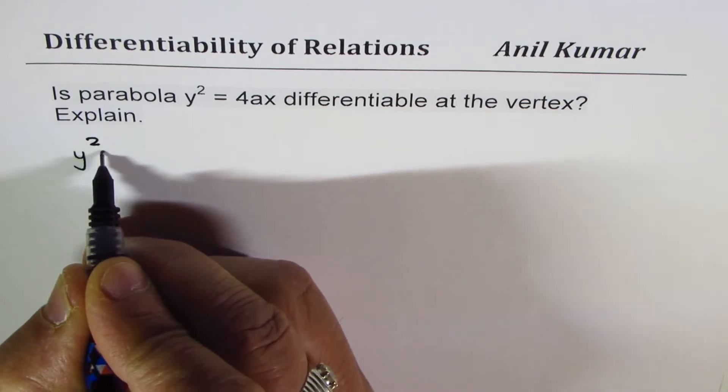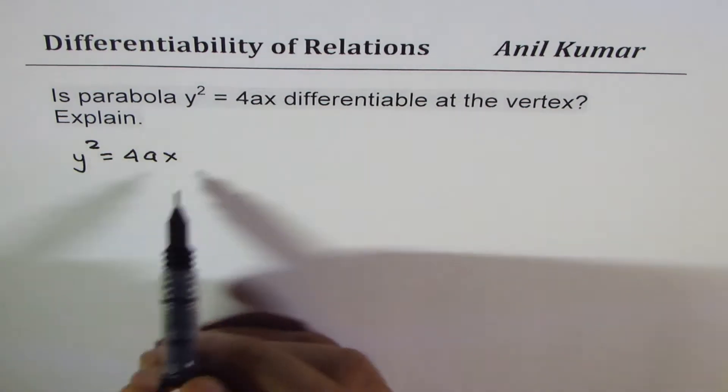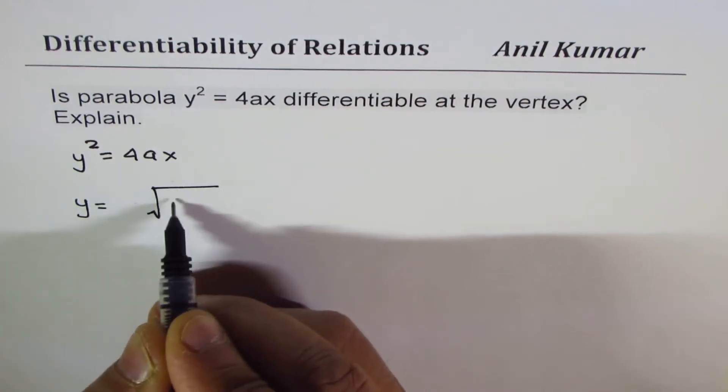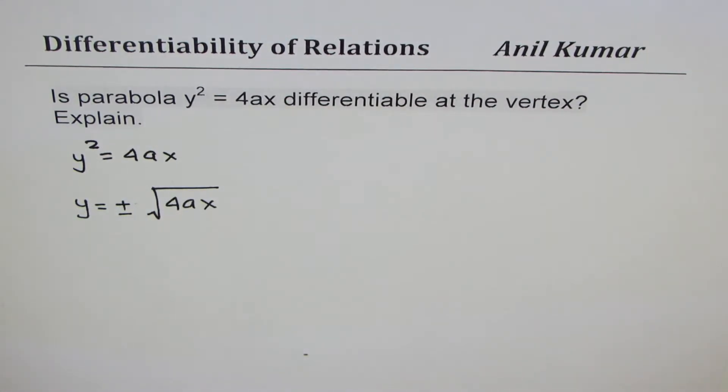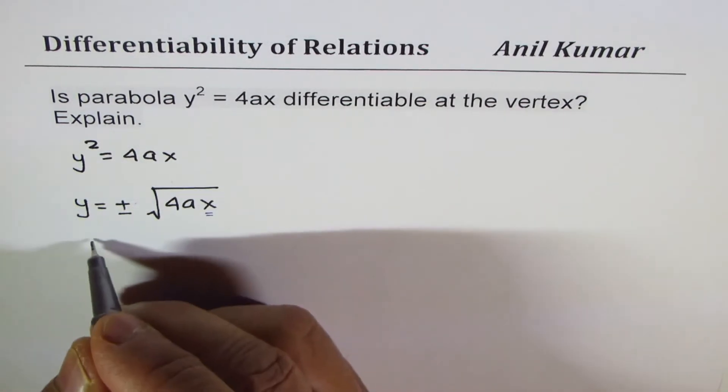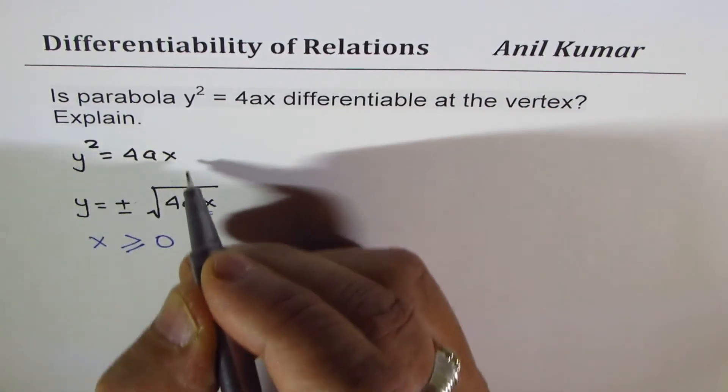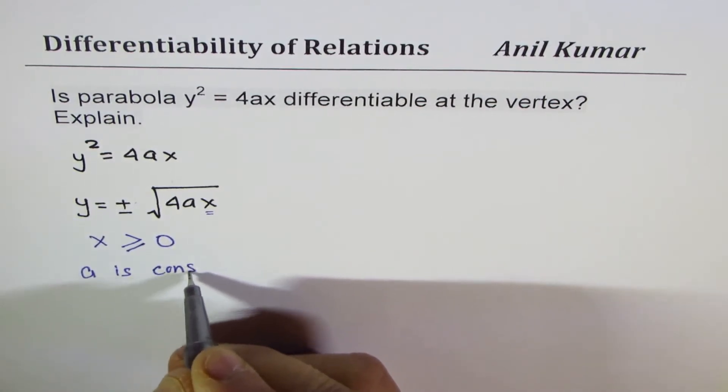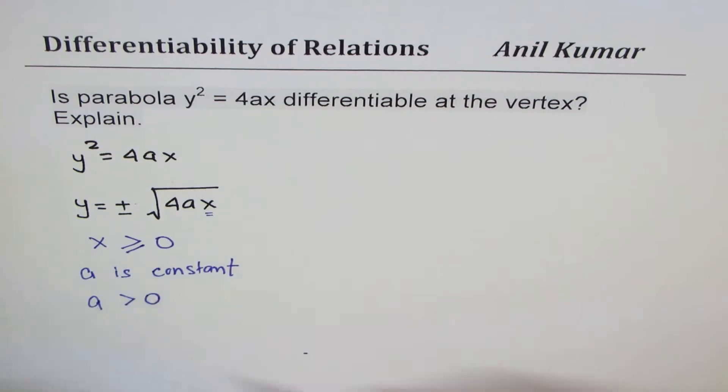So if you rewrite this, you get y = ±√(4ax). Within the square root, the value of x has to be greater than or equal to 0. We are assuming that a is constant and a is also greater than 0.